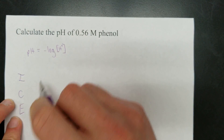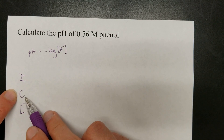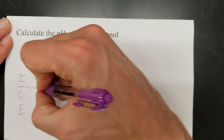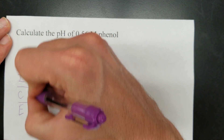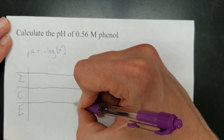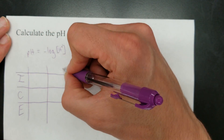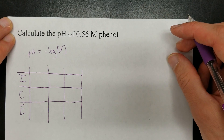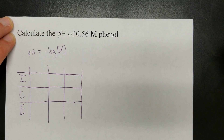Remember: ICE stands for initial concentration, changing concentration, and equilibrium — a.k.a. final concentration. Why is the ICE table highly recommended? It allows you to organize your thoughts and basically not make a mistake, because small mistakes snowball into big mistakes and cause the problem to be answered wrong.